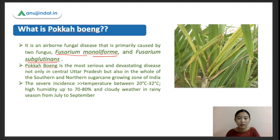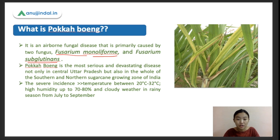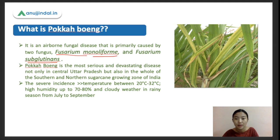Pokhavoyang can be a serious concern for farmers, especially in Uttar Pradesh, which is a major sugarcane growing area providing huge revenues and good yields. The severe incidences can occur at temperatures between 20°C and 32°C - within this range the disease is most severe. The ranges can differ from 15°C to 40°C, but between 20 to 32°C you can see the highest incidences.